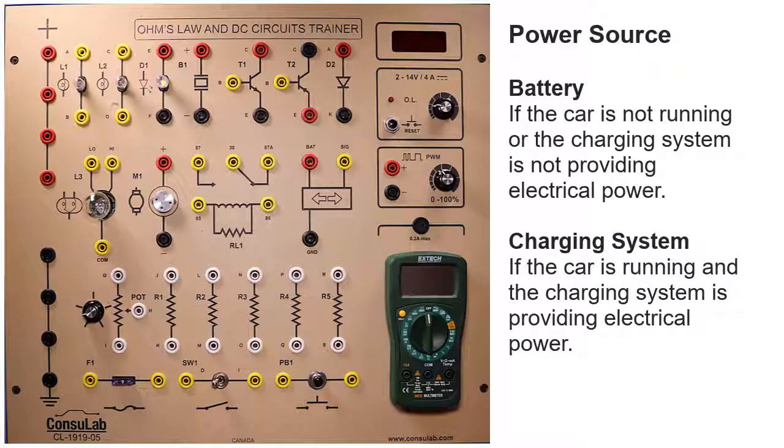The power source on an automobile will be the battery if the car is not running or the charging system is not supplying power, or the charging system when the engine is running and the charging system is supplying power. It will be 12 volt DC for all practical purposes. On the trainer board we'll see the power source indicated by four red positive ports. Think of these ports as the positive post of the battery.